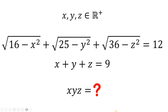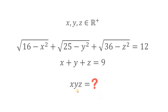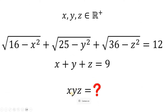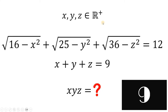Can you solve this Math Olympiad problem? Here's the question. Solve for the value of the product of x, y, and z, given this equation: square root of (16 minus x squared) plus square root of (25 minus y squared) plus square root of (36 minus z squared) equals 12, and x plus y plus z equals 9, wherein x, y, and z are all positive real numbers. You can pause this video if you want to give this problem a try.